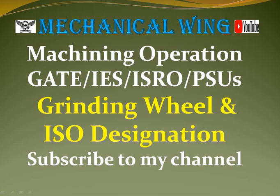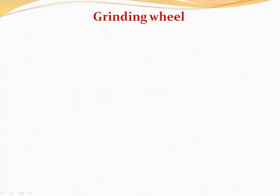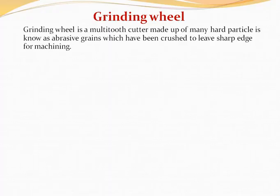Hello friends, welcome back to Mechanical Wing. In this lecture we are going to start with grinding wheel and its ISO designation. First we will discuss what is grinding wheel. Grinding wheel is a multi-tooth cutter made up of many hard particles known as abrasive grains, which have been crushed to leave sharp edges for machining.